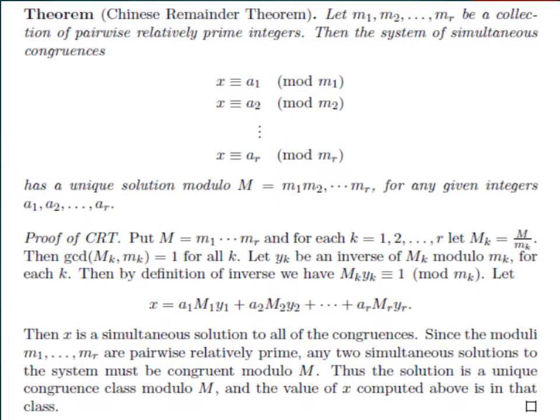Let yk be an inverse of Mk modulo mk for each k. Then by definition of inverse, we have Mk yk is congruent to 1 mod mk. So x will be equal to a1·M1·y1 plus a2·M2·y2 plus ... plus ar·Mr·yr. Then x is a simultaneous solution to all of the congruences. Since the moduli m1 to mr are pairwise relatively prime, any two simultaneous solutions to the system must be congruent modulo M. Thus, the solution is a unique congruence class modulo M, and the value of x computed above is in that class.